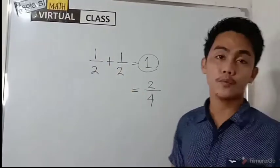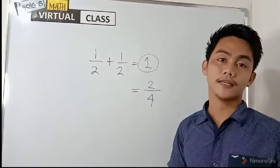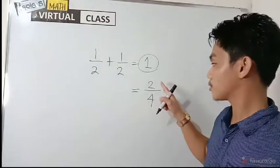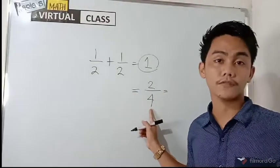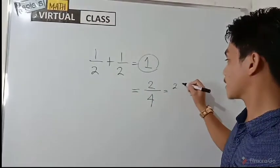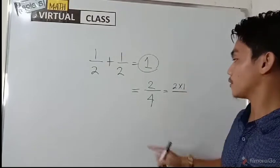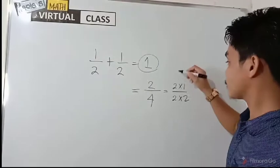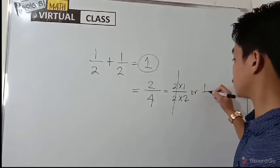So we know that two-fourths is not yet in lowest term. If we are going to get the lowest term of two-fourths, we know that two and four are multiples of two. So we can have two times one for two, and two times two for four. And we can cancel out two here, or the lowest term is one-half.